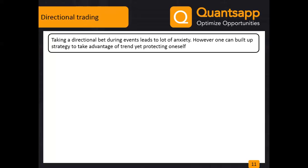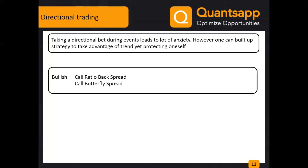For directional trading from a bullish point of view, we have the call ratio backspread and the call butterfly spread. If you expect implied volatility to continue rising, you can do a ratio backspread where your loss is limited and profit potential is good. If you expect volatility to subside or be sideways, you can do a call butterfly spread. Strike selection from 40-plus available strikes is key.